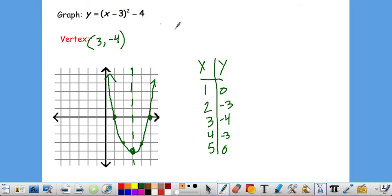And if you were asked to describe the shifts or transformations, you'd have a shift right 3, shift down 4. Or this graph opens up, so it has a minimum value, a minimum value at, in our case, negative 4.